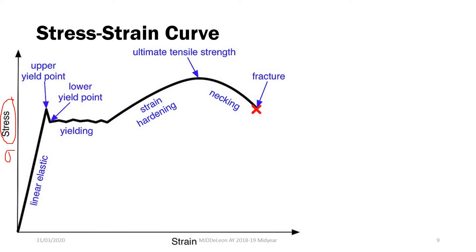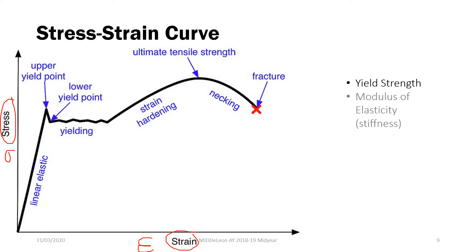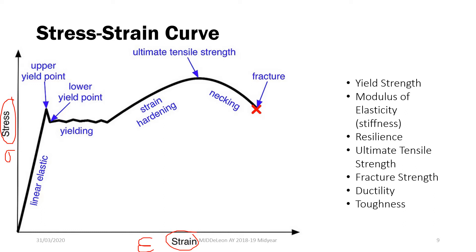From the stress-strain curve, we can determine different properties of our material: the yield point, the strength of the material, and the fracture point — how much stress or strain is needed for fracture. Specifically, what we can obtain from the stress-strain curve includes: yield strength, modulus of elasticity (also called stiffness), resilience, ultimate tensile strength, fracture strength, and ductility and toughness of your material.